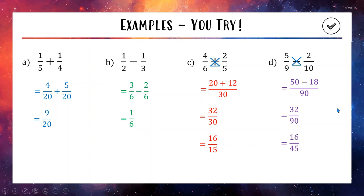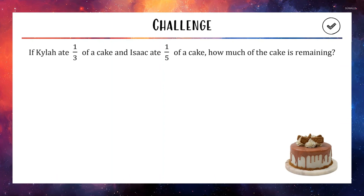Hopefully you got all four correct and you're ready to try more in the practice work. We'll finish today's video with a quick challenge question: if Kyla ate 1 third of a cake and Isaac ate 1 fifth of a cake, how much of the cake is remaining? I'm not going to go through this on screen — I want you to have a go yourself. If you think you have an answer, post it in the comments below or send me an email. First correct answer will get a prize!